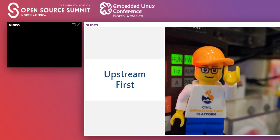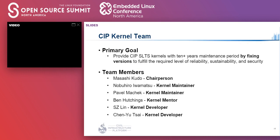The primary goal of the CIP Kernel Team is to provide CIP SLTS kernels for 10-plus years by fixing versions to fulfill the required level of reliability, sustainability, and security. There are two kernel maintainers and two kernel developers in CIP. While we are highly motivated to work on the project, we don't think we can achieve the goal by ourselves only. We definitely rely on outputs from upstream projects. The question is how to use those outputs and how to work with upstream projects.